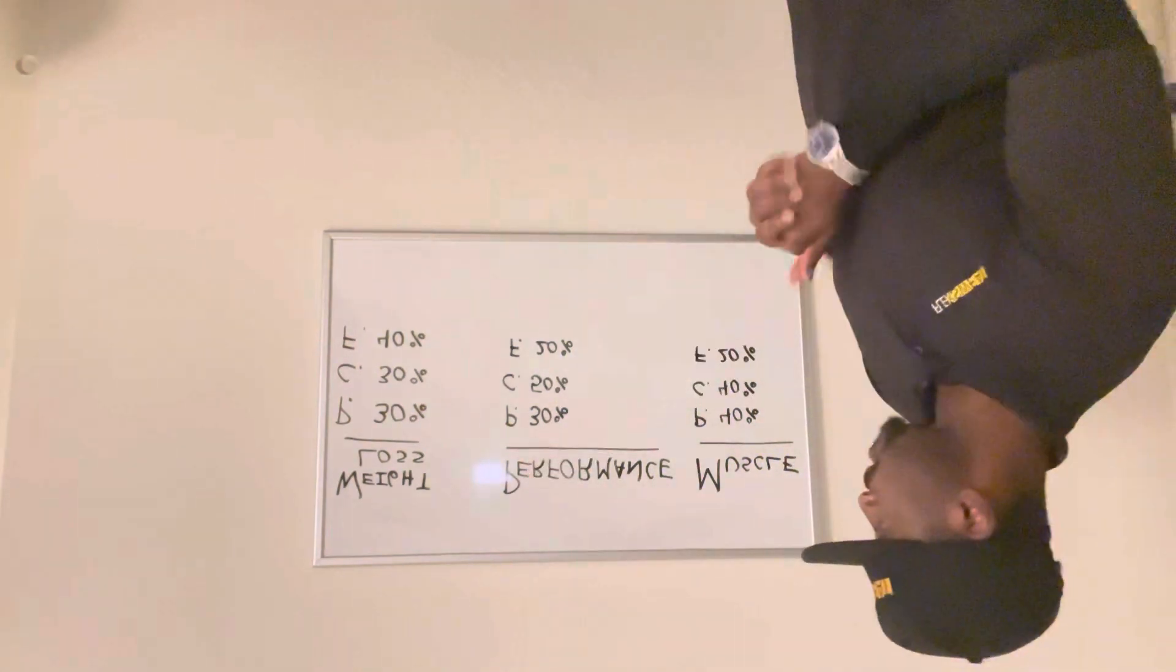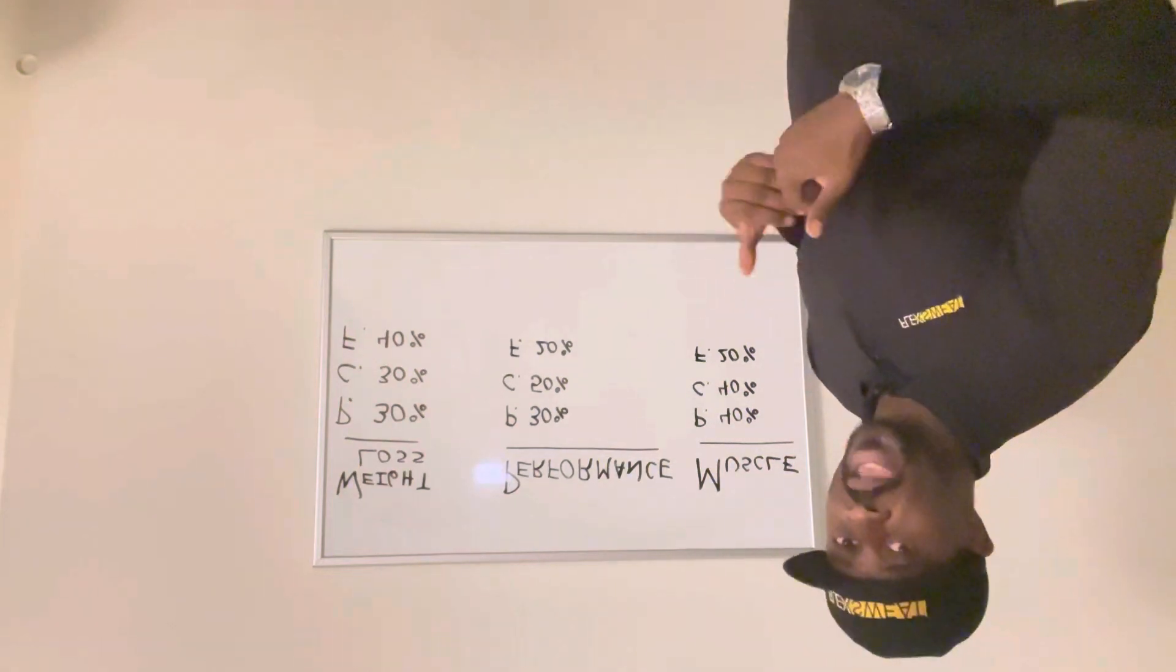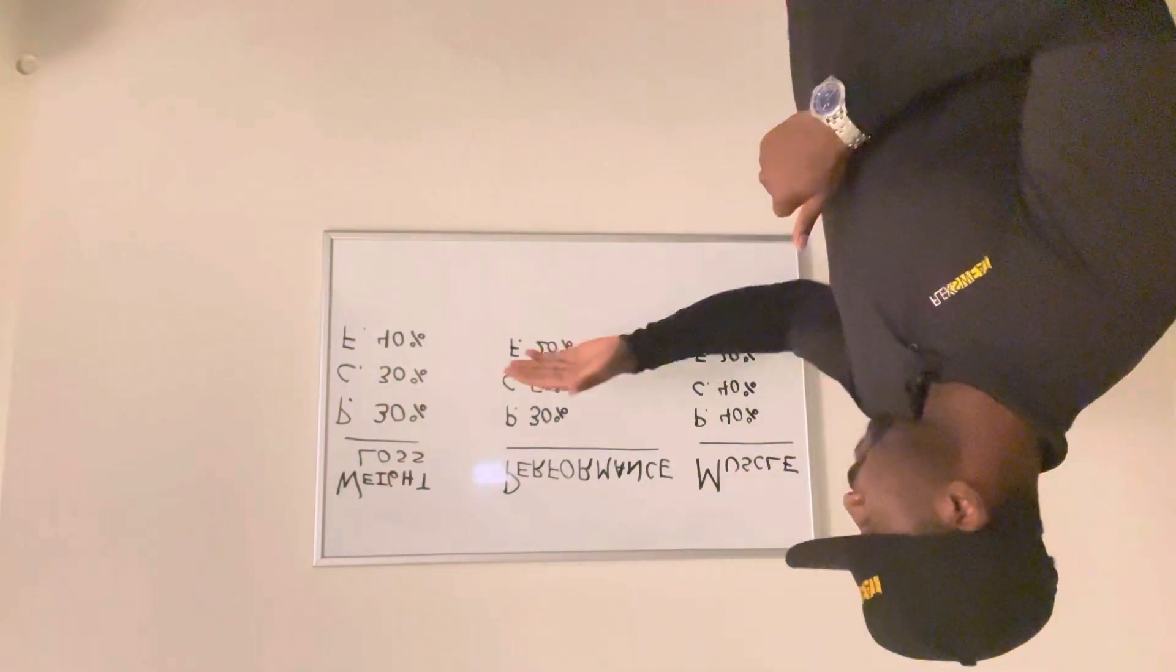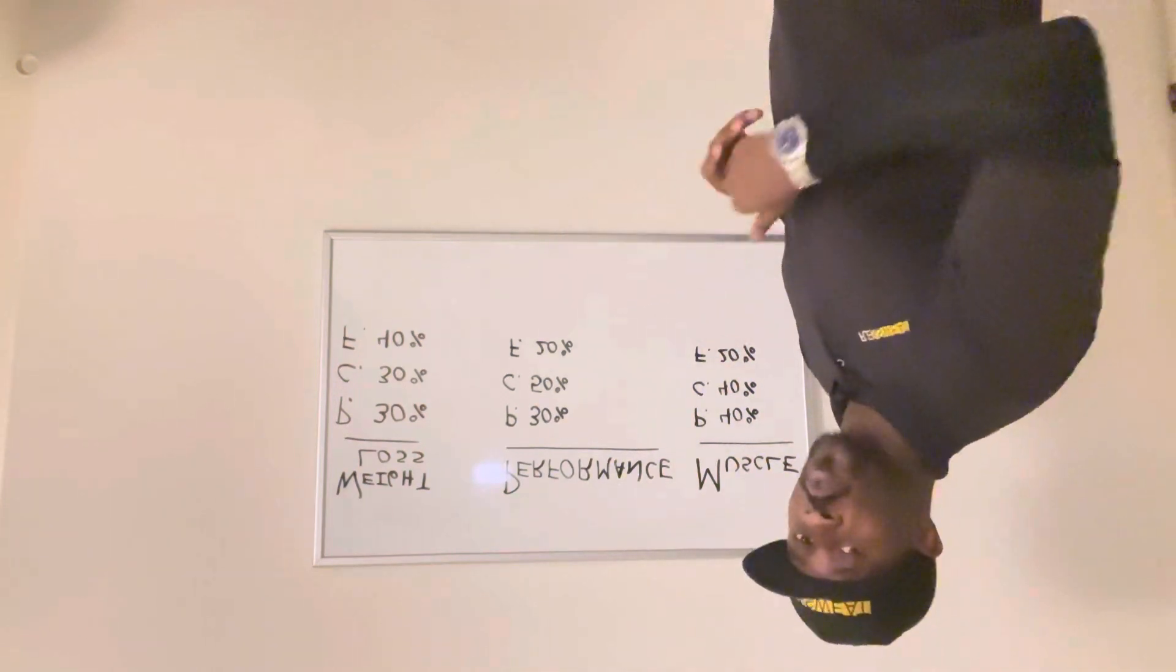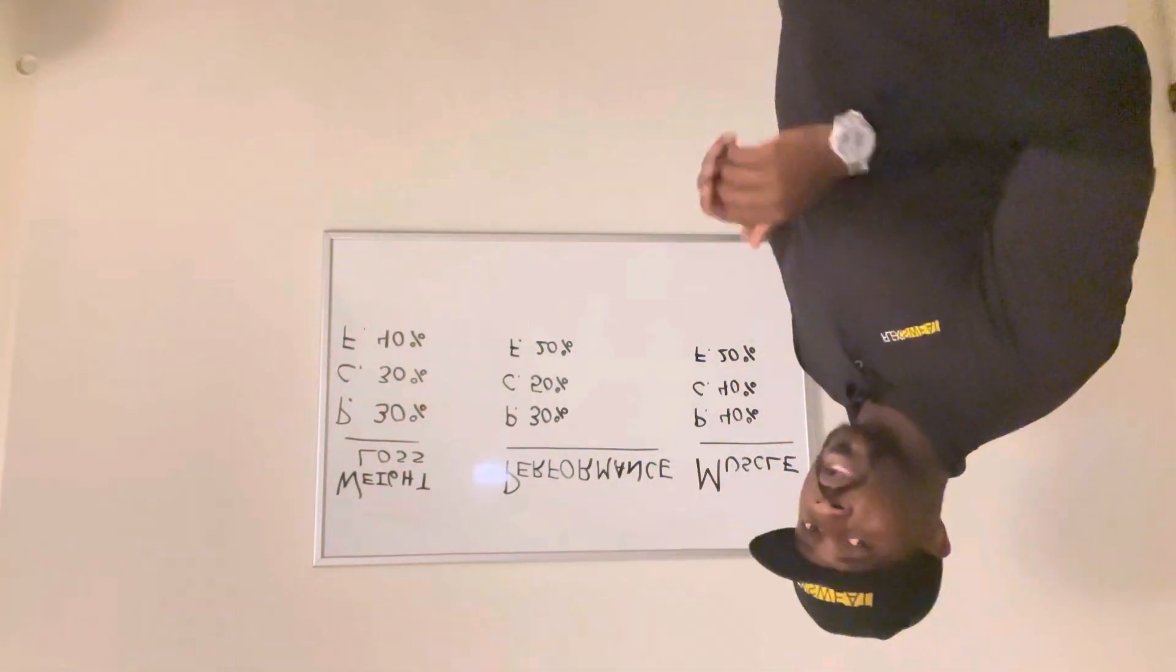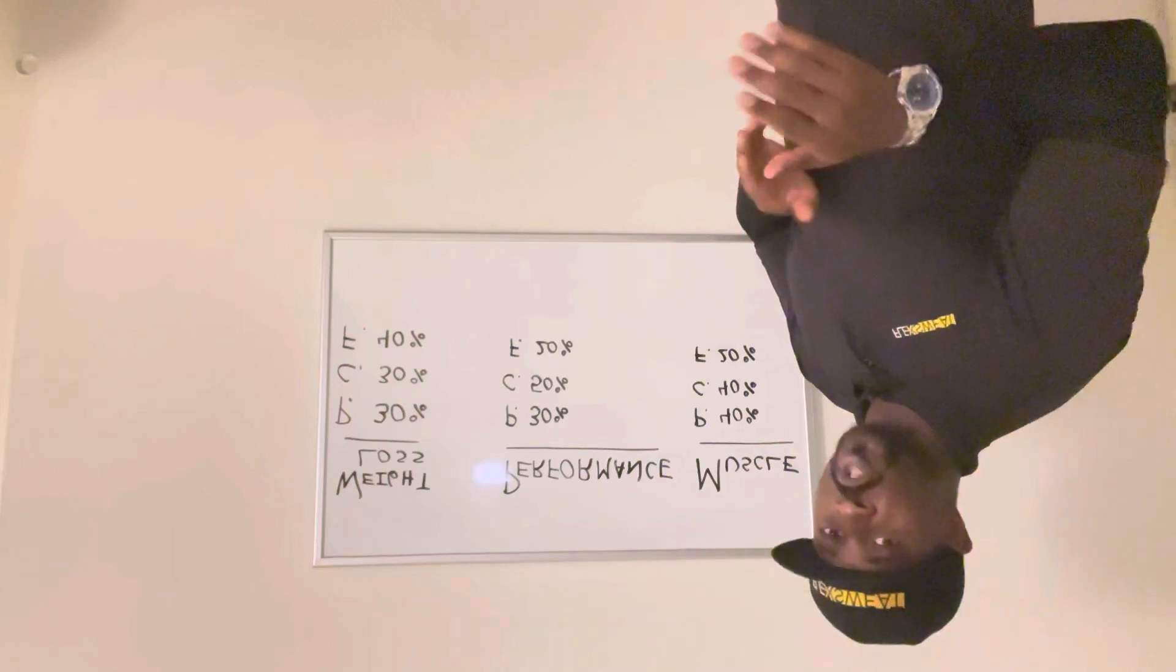For performance: 30% protein - just enough to maintain muscle. 50% carbohydrates so they're fueled for the workout and also fueled after the workout. 20% fats - we want to keep that at the minimum just to make sure we stay healthy.